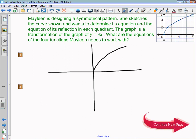Right now what Maylene has is that in quadrant 1, we have y equals the square root of x. What we need to do then is reflect this into quadrant 2, quadrant 3 eventually, and quadrant 4.